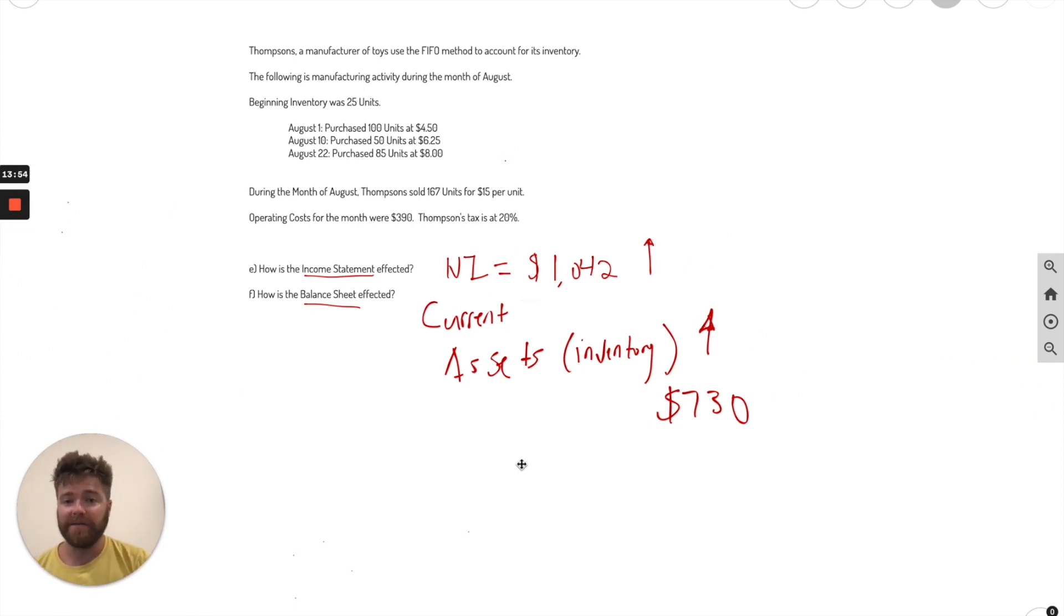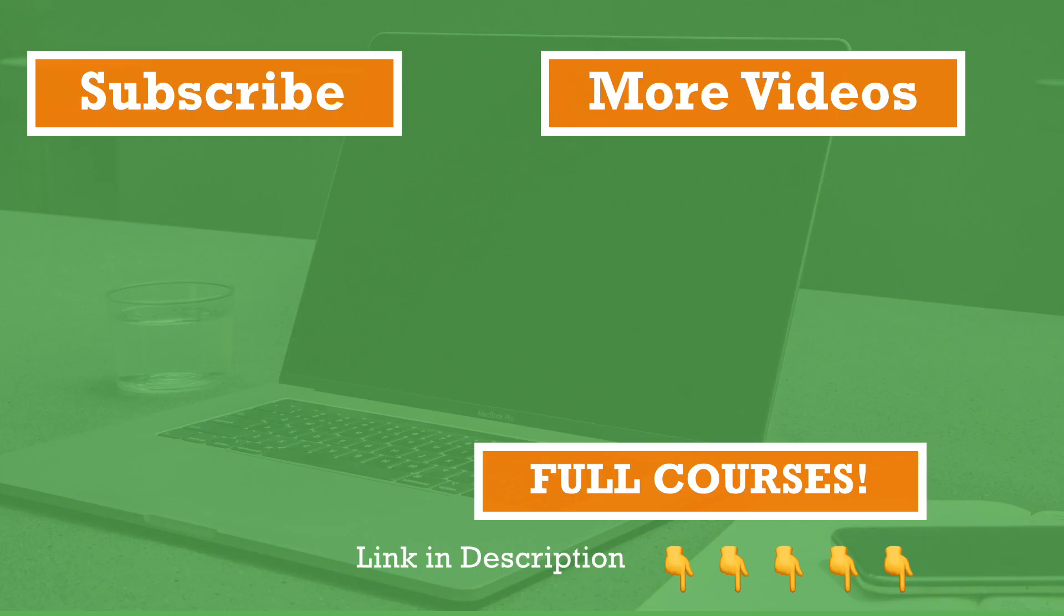And that is how those financial statements are affected by this FIFO inventory. So we went through how to calculate cost of goods sold, ending inventory, calculating net income, gross income, and finally, how are the financial statements affected? And that was another edition of Test Yourself. These are practice problems that will help you with your exams, and overall, just understand accounting. Please make sure to like, subscribe, but really support this channel. And thanks for watching. I'll see you in the next one.